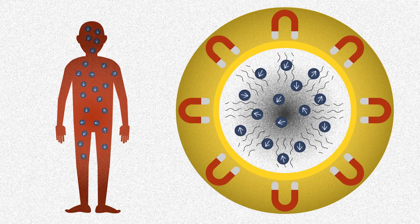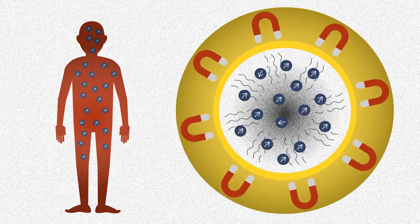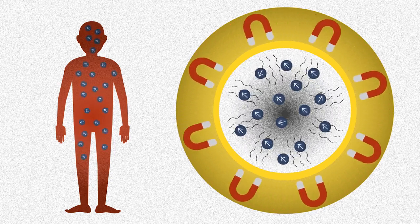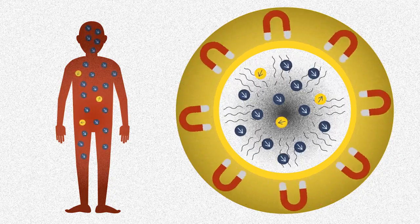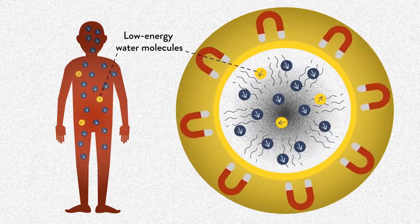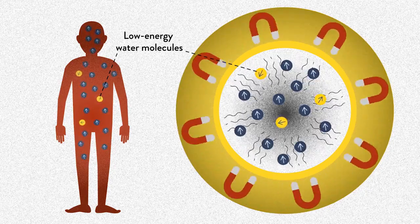Normally, the water molecules inside us are arranged randomly, but when we lie inside the magnetic field, most of our water molecules move at the same rhythm or frequency as the magnetic field. The ones that don't move along the magnetic field are called low energy water molecules.